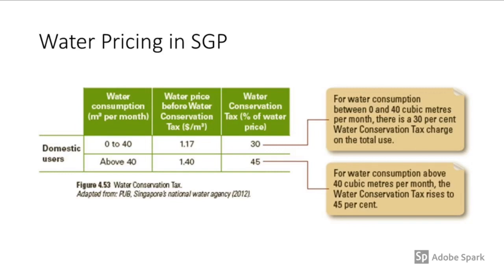As shown in the table from your textbook, for domestic consumption: if you consume below 40 cubic meters per month, your water price is $1.17 and your tax rate is 30%. However, if you use above 40 cubic meters, the water price itself increases and the water tax rate increases by a further 15%, making the total cost significantly higher.